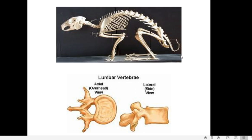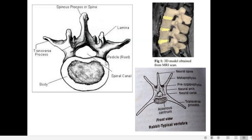The vertebrae of rabbit are said to be amphiplatian or acoelous. Looking at one vertebra, the main bony part or body is called the centrum. The centrum is flat on both sides — flat on the anterior side as well as the posterior side. Since both sides are flat, it is said to be amphiplatian: 'amphi' means both, 'platy' means flat. It is also called acoelous: 'a' means no, 'coelus' means cavity — so there is no concavity on either the anterior or posterior side.